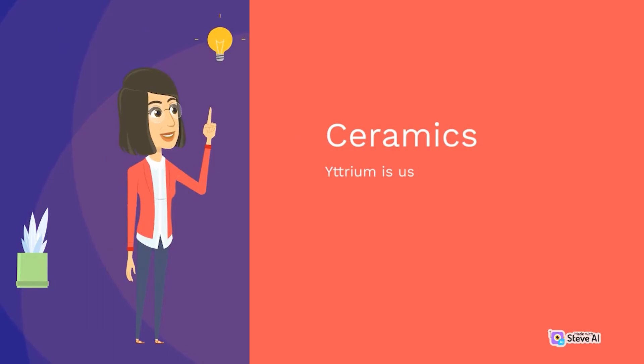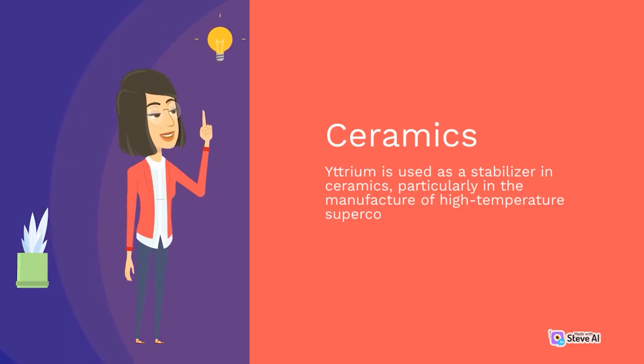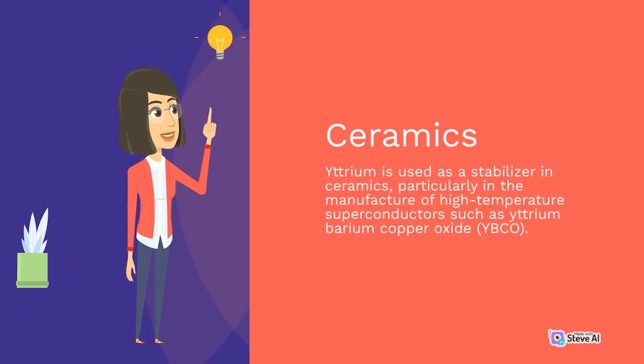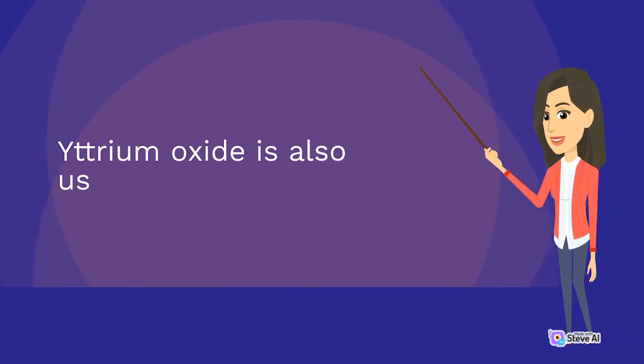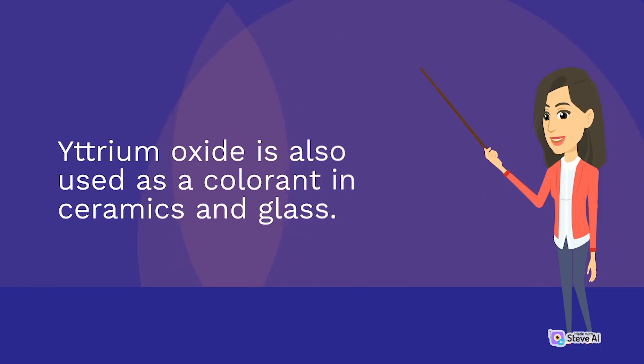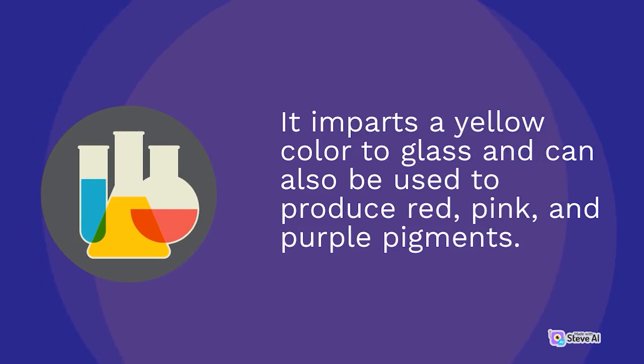Yttrium is used as a stabilizer in ceramics, particularly in the manufacture of high-temperature superconductors such as Yttrium barium copper oxide (YBCO). YBCO is a ceramic material that has zero electrical resistance at very low temperatures, making it ideal for use in superconducting magnets and other applications. Yttrium oxide is also used as a colorant in ceramics and glass, imparting a yellow color to glass and also used to produce red, pink, and purple pigments.